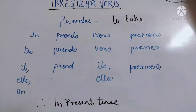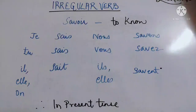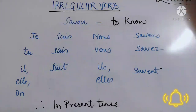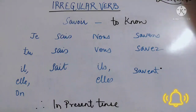The next verb means 'to know' — 'savoir'. Remove the infinitive part. We are left with the stem S-A-V-O. 'Je sais' means 'I know'. 'Tu sais' means 'you know'. Spelling is S-A-I-S for 'je' and 'tu'. S-A-I-T for 'il', 'elle', or 'on' — meaning he knows, she knows, everyone knows. 'Nous savons' — S-A-V-O-N-S.